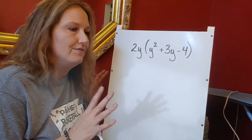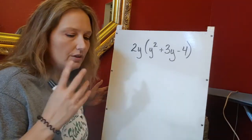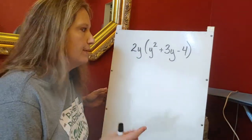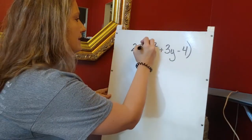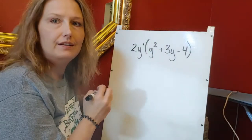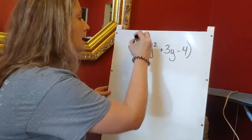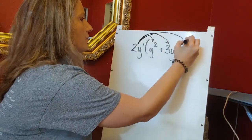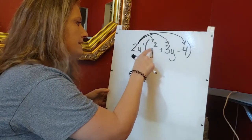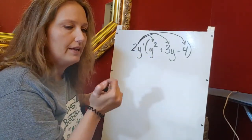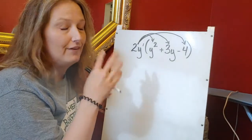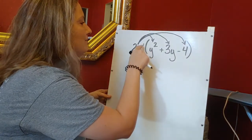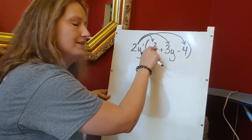Lastly, we have finding a product. This is going to work just like distributing normally, except you have to be aware of your exponents. Right now this y has an exponent of one even though it's not written. We're going to distribute two y all the way through our parentheses. When we multiply variables with exponents, we add the exponents — so two y times y-squared: the exponent of one plus two gives me a 2y-cubed.